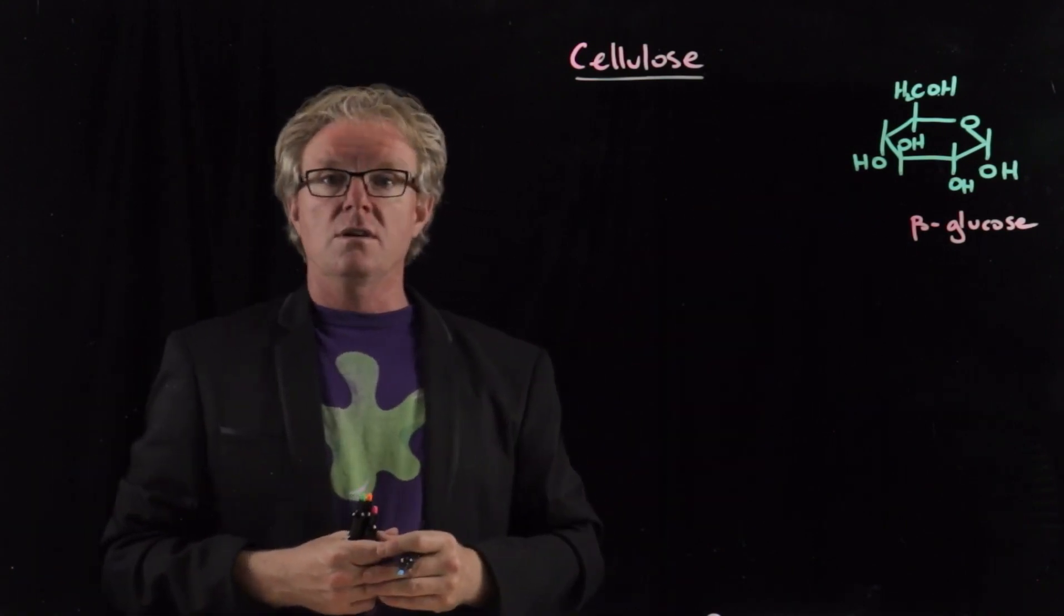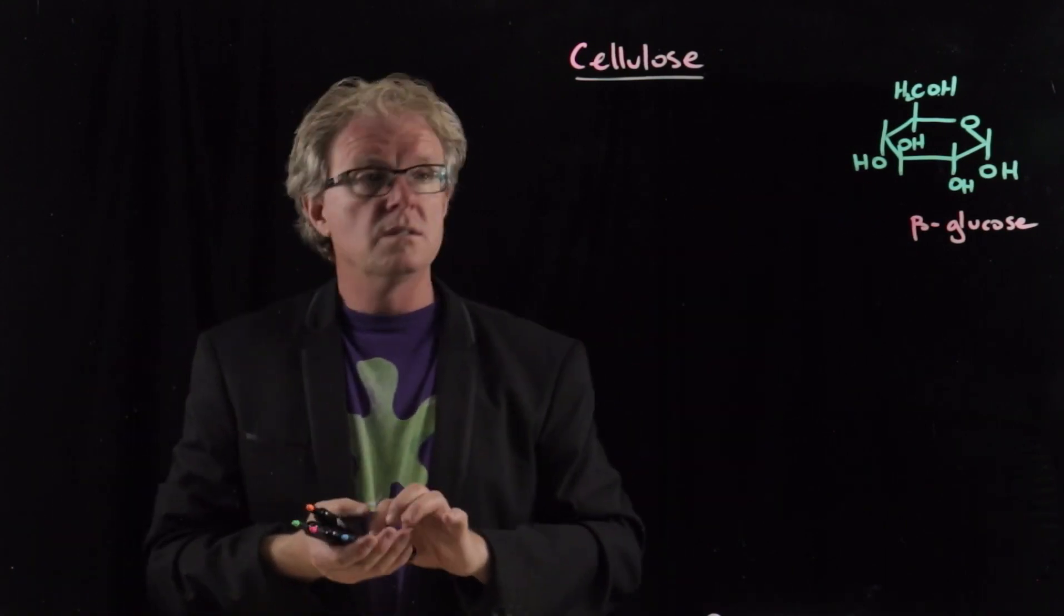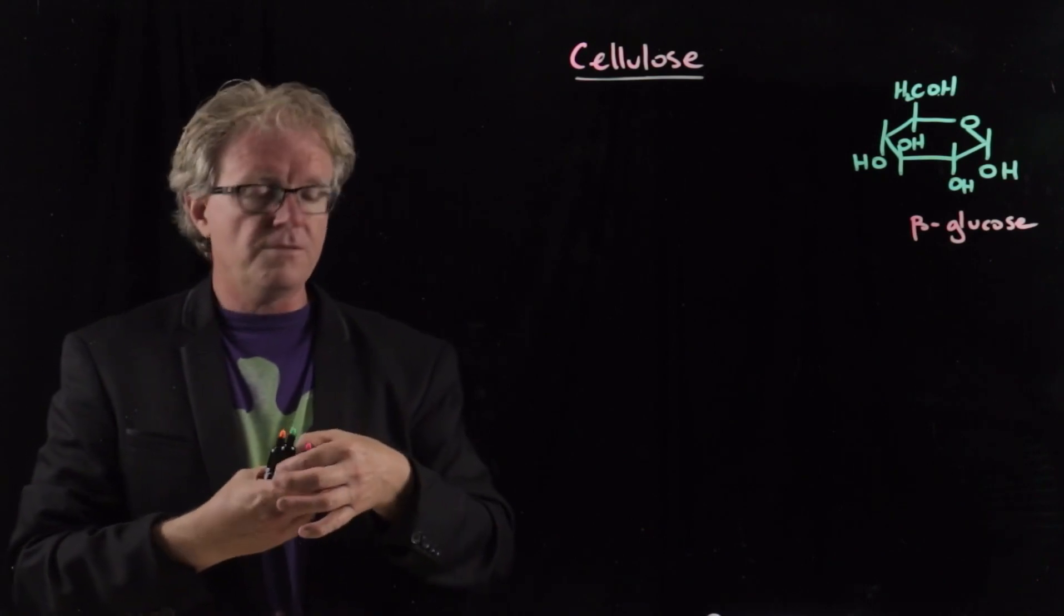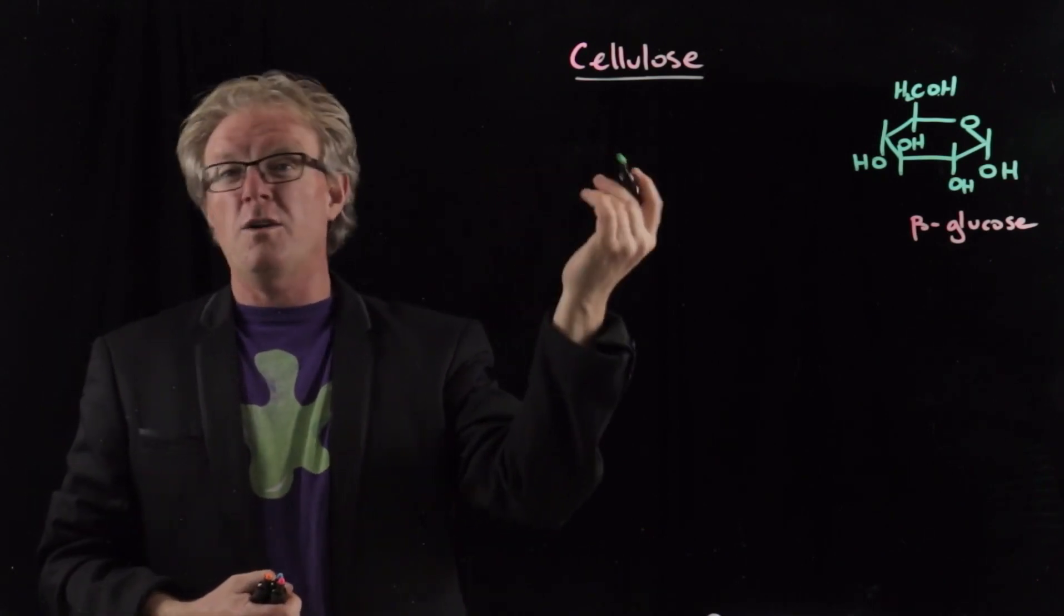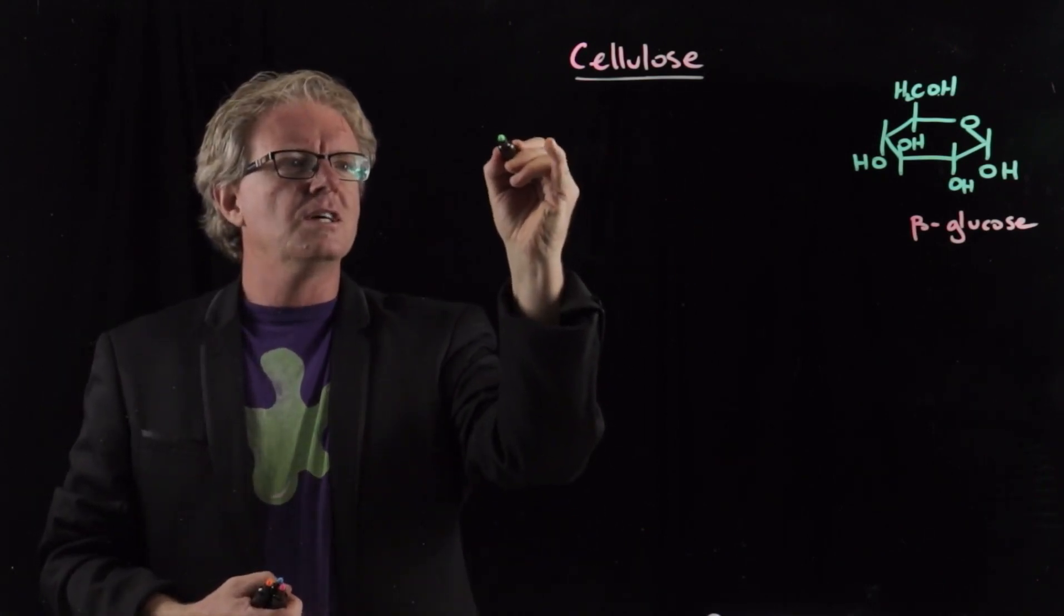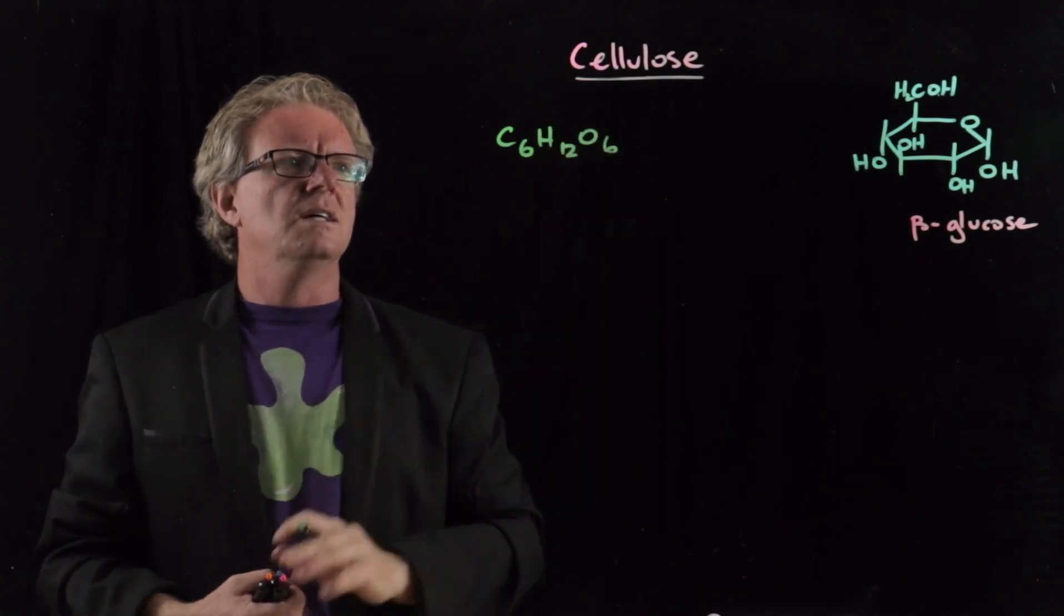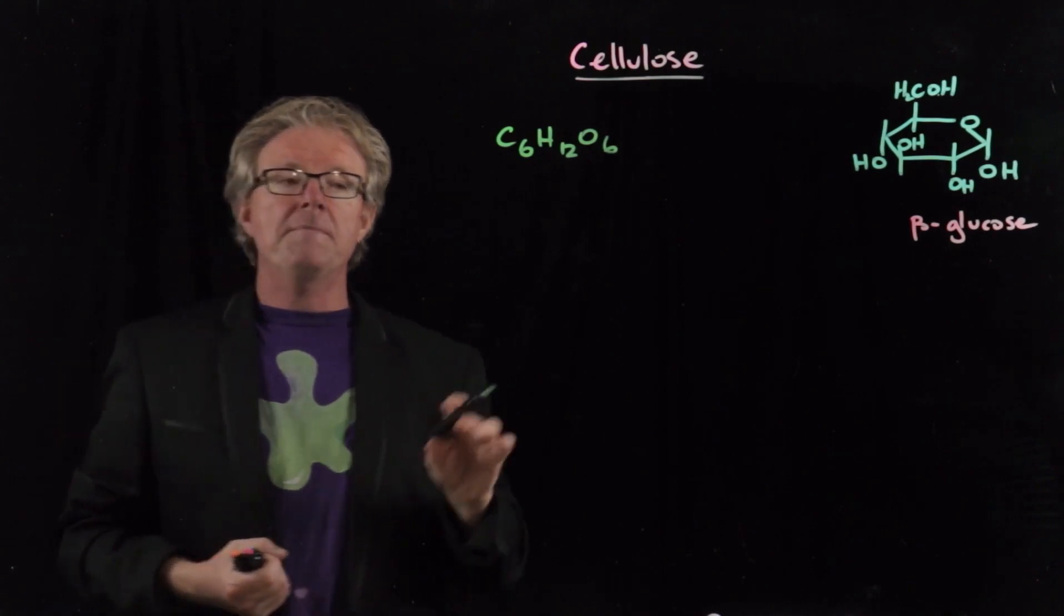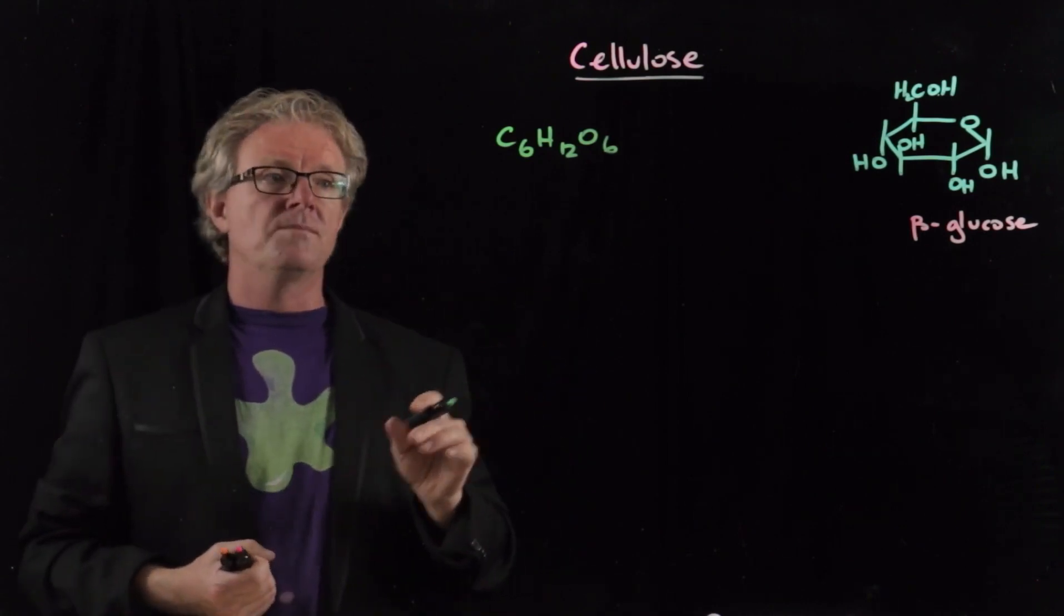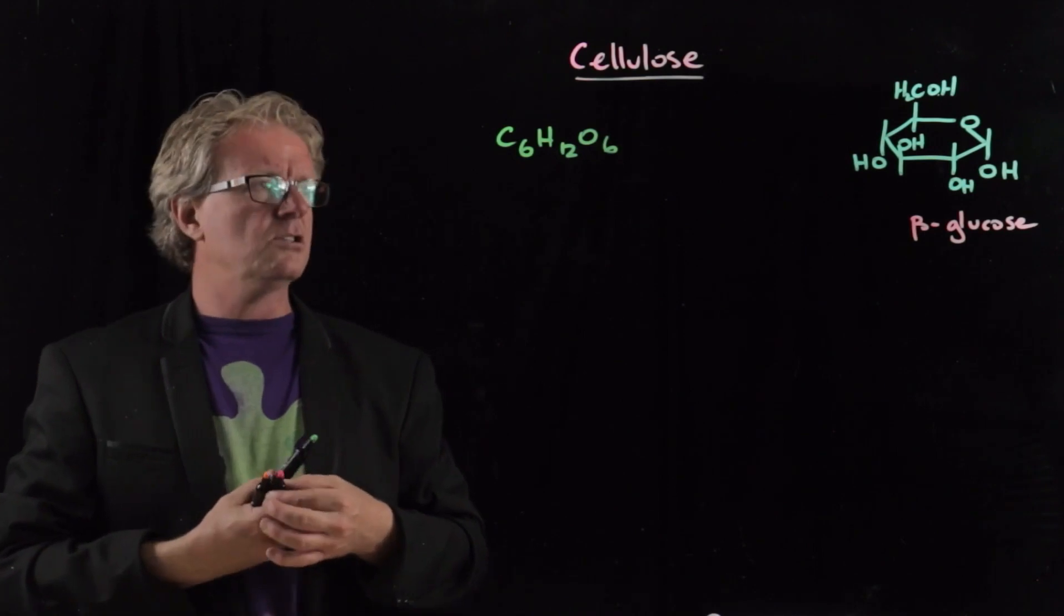I've got the ring structure of cellulose. Now all you bioheads will be able to rattle off the formula of glucose: C6H12O6. Cellulose is a polymer made up of glucose units joined together via condensation polymerization.